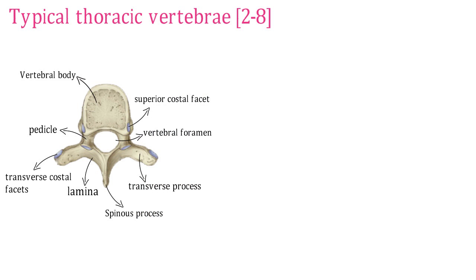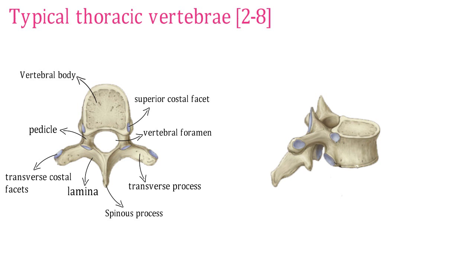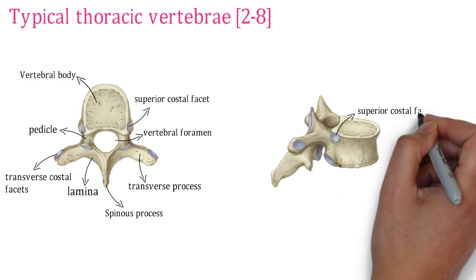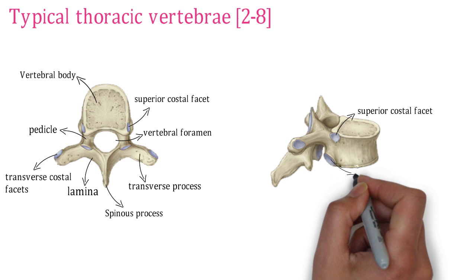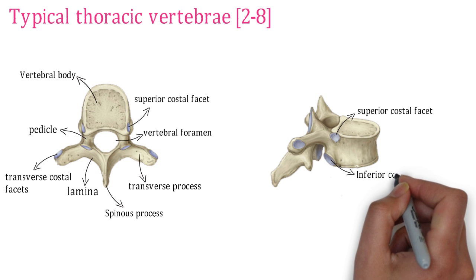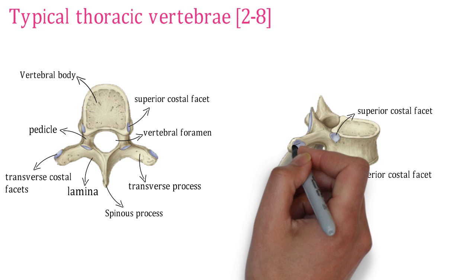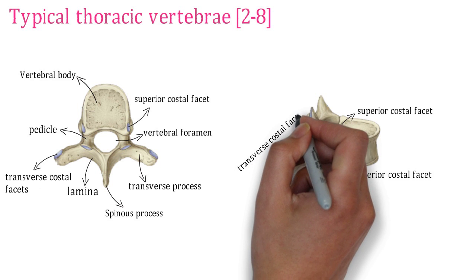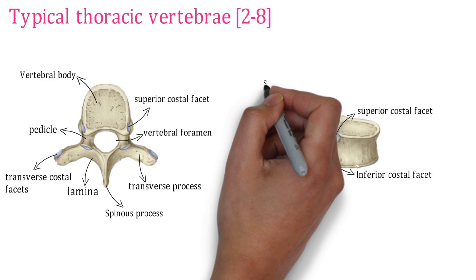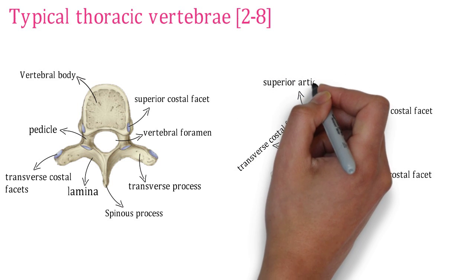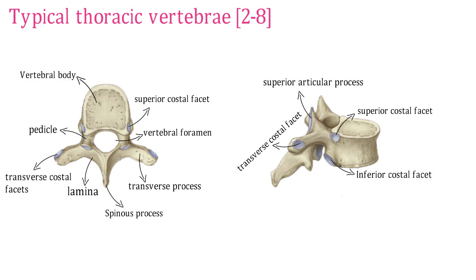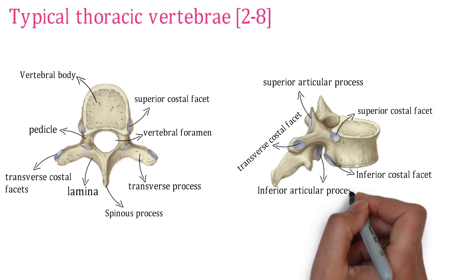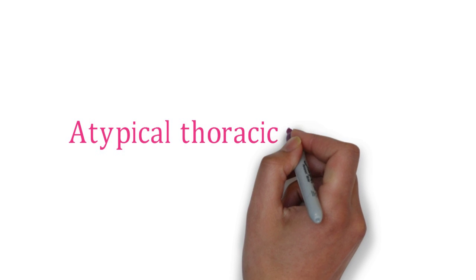There are two types of costal facets in the thoracic vertebra: the transverse costal facet and the superior costal facet. In the lateral view, the superior costal facet articulates with the head of its own rib. The inferior costal facet articulates with the head of the rib below. The transverse costal facet articulates with the tubercle of its own rib. The superior articular process articulates with the upper vertebra, and the inferior articular process articulates with the lower vertebra.